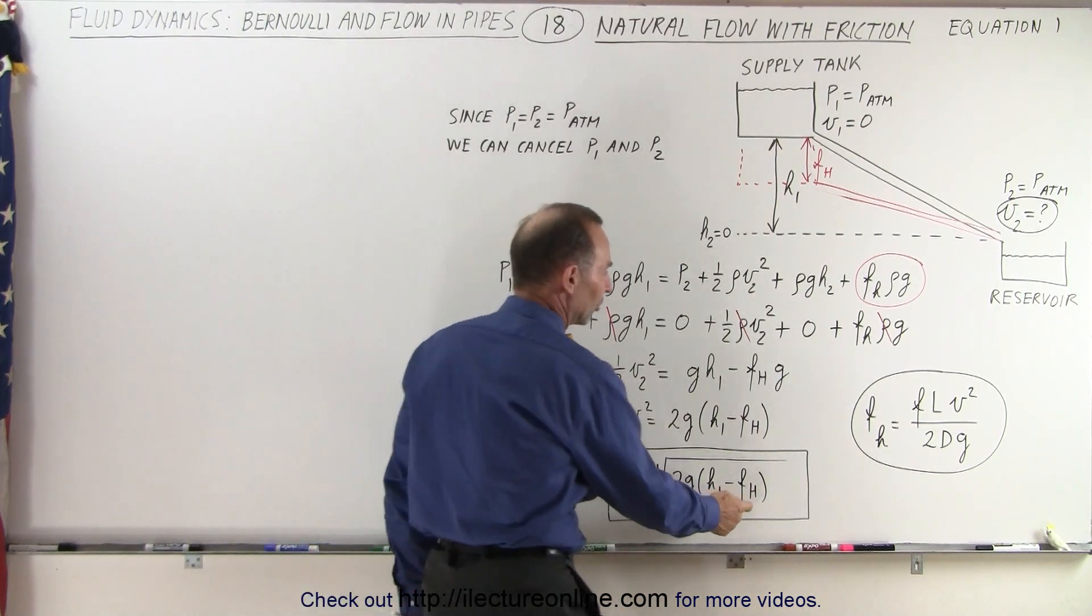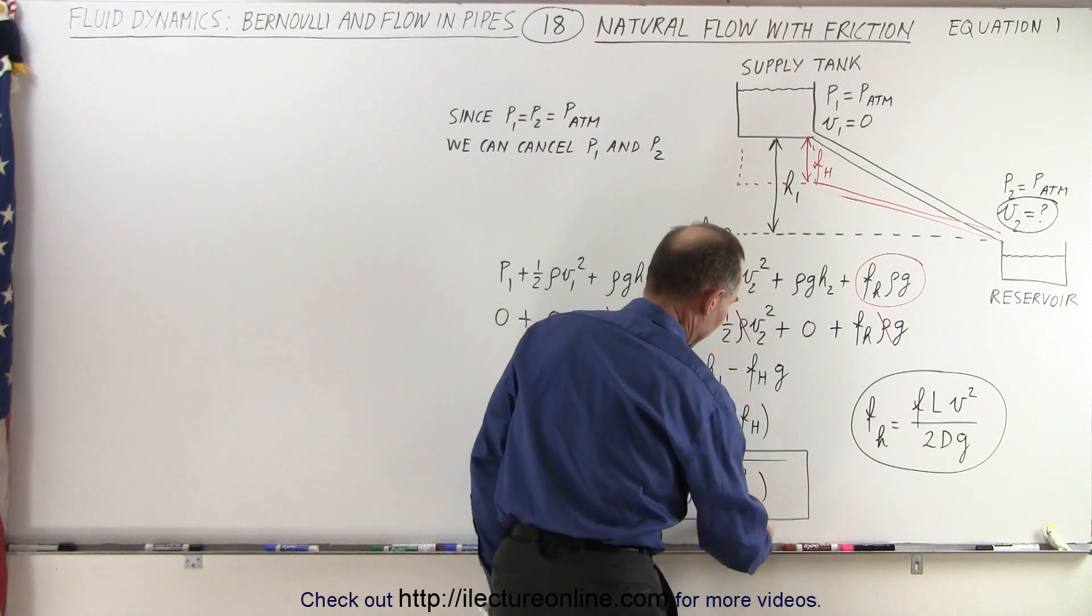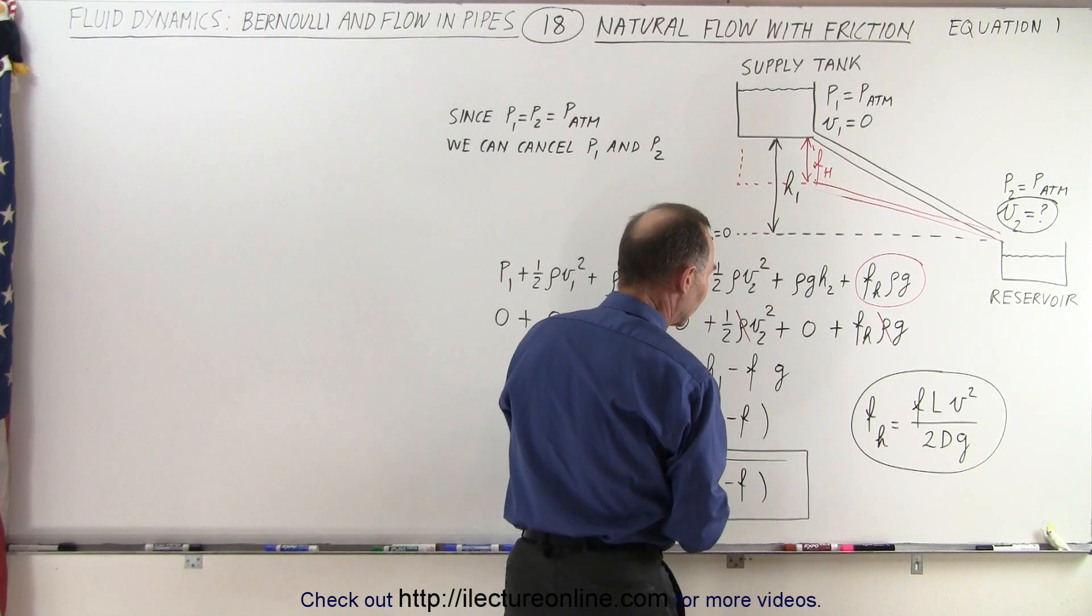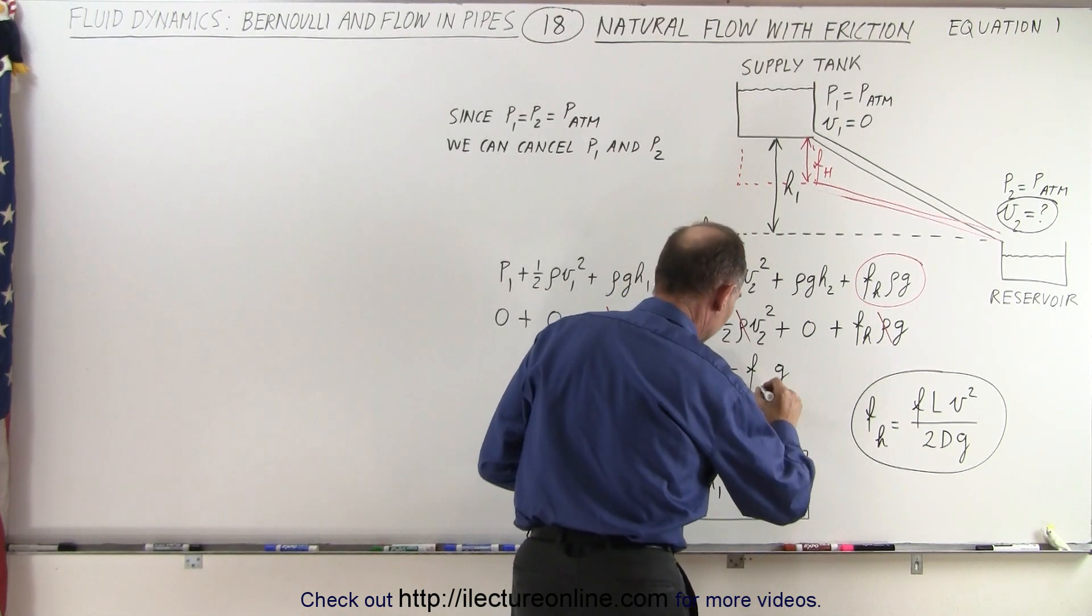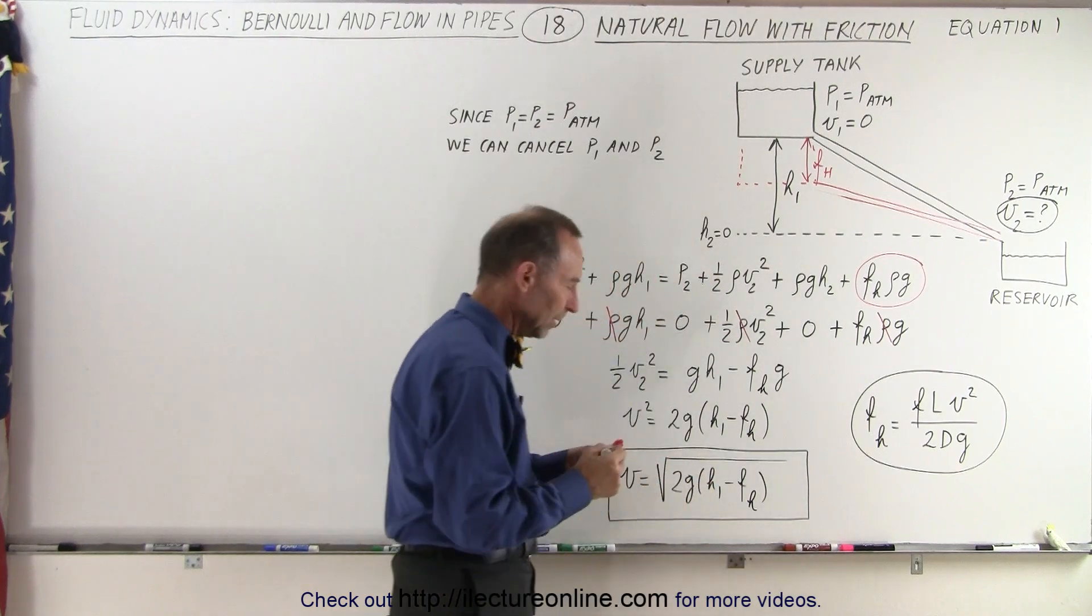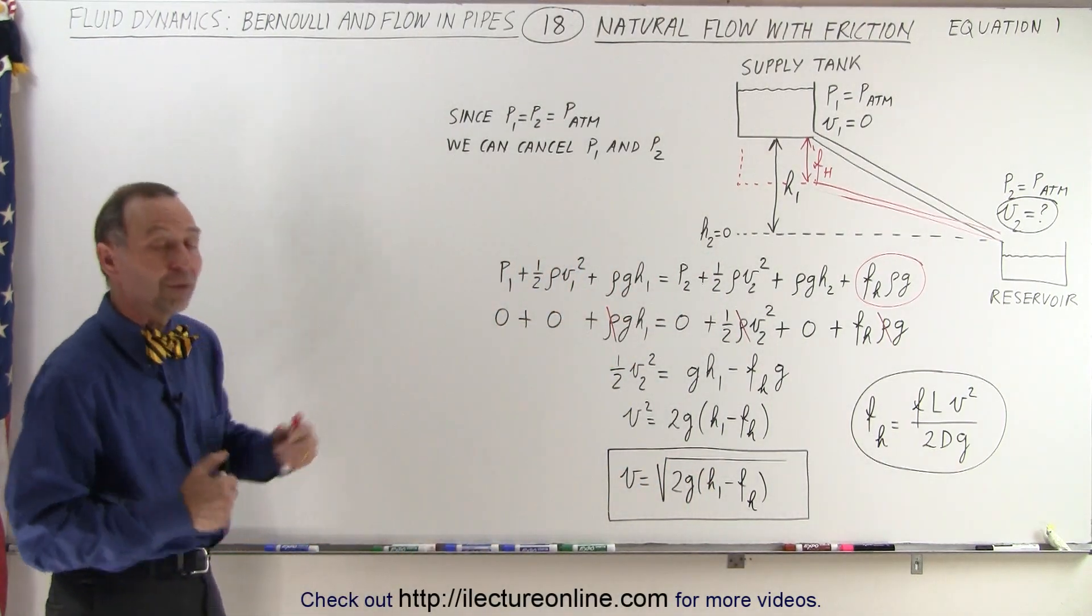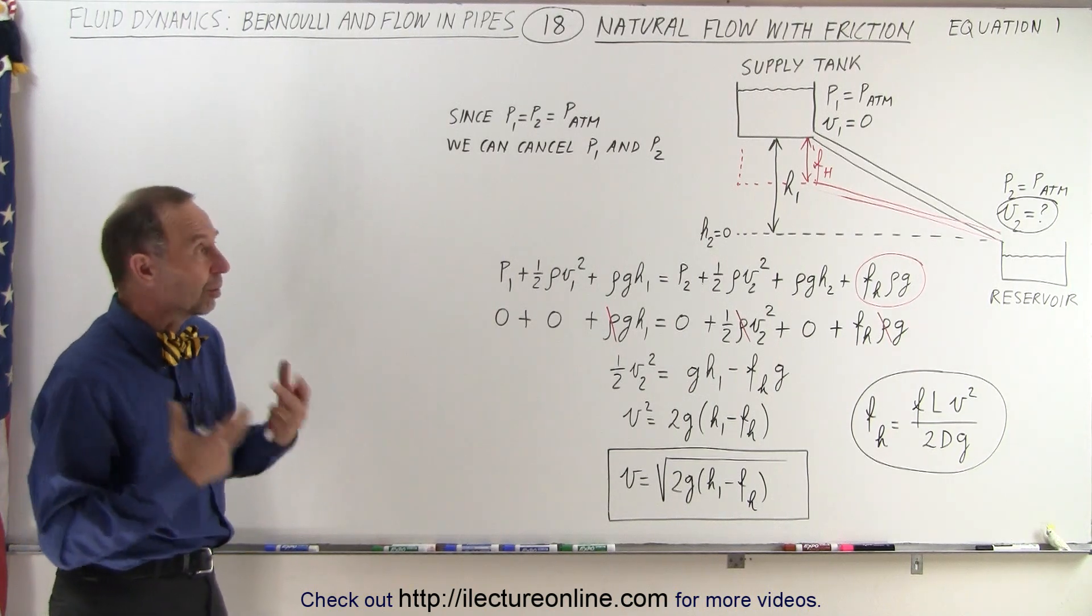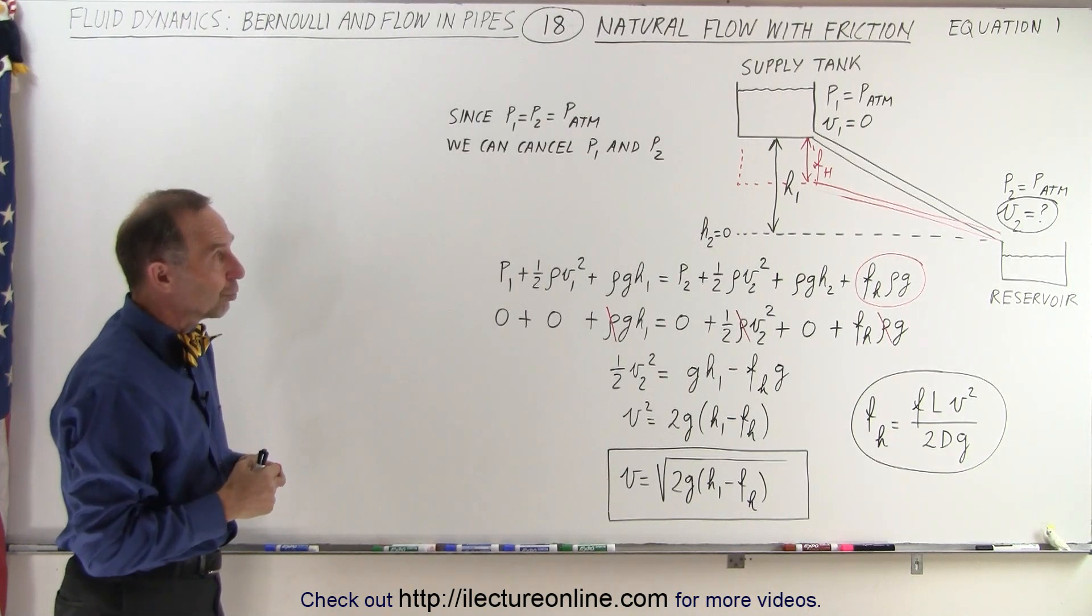Remember that the frictional head loss can be found by using this equation, and I probably should have used small h instead of big H. That's the normal thing of doing. So let's make that a small h right here. There, that's a little bit better. So the friction head loss can be calculated by, hopefully by now, our familiar equation. So that's equation number one. Notice we have equation one up there.